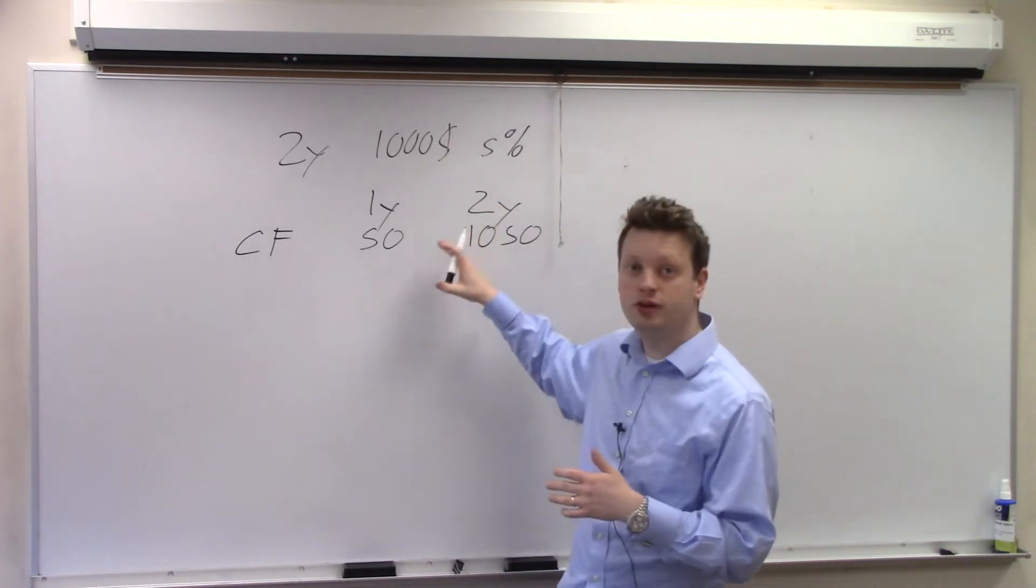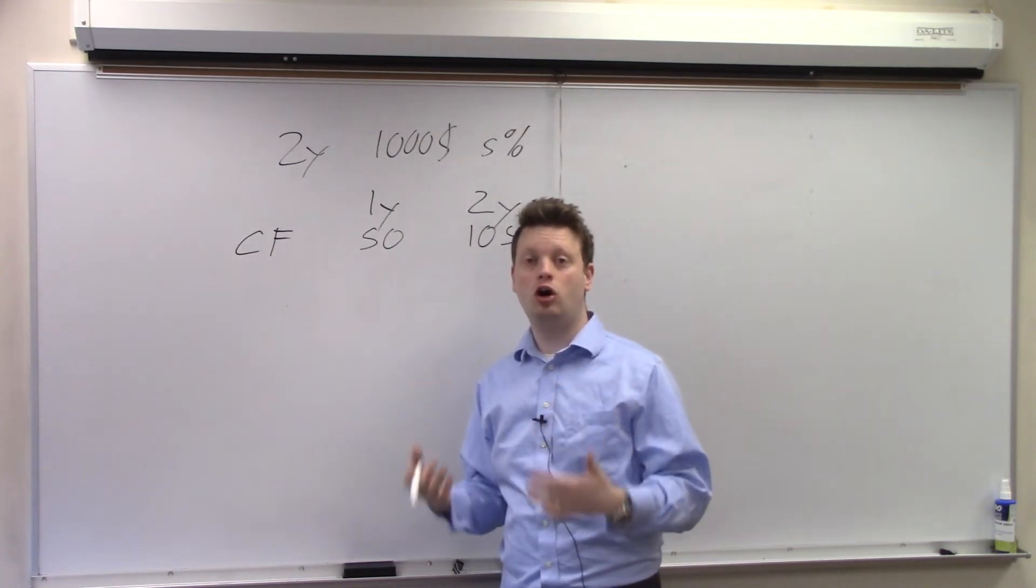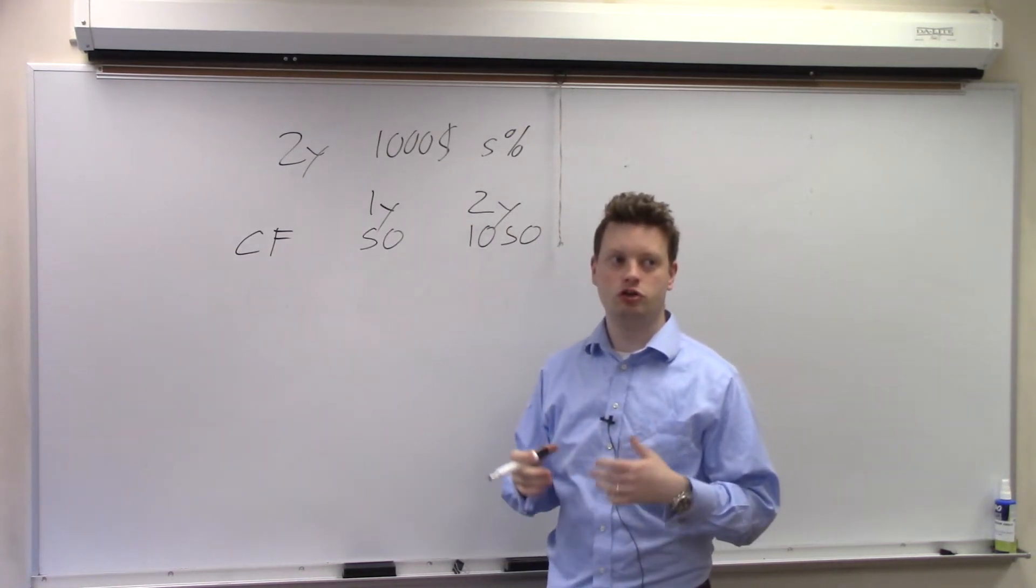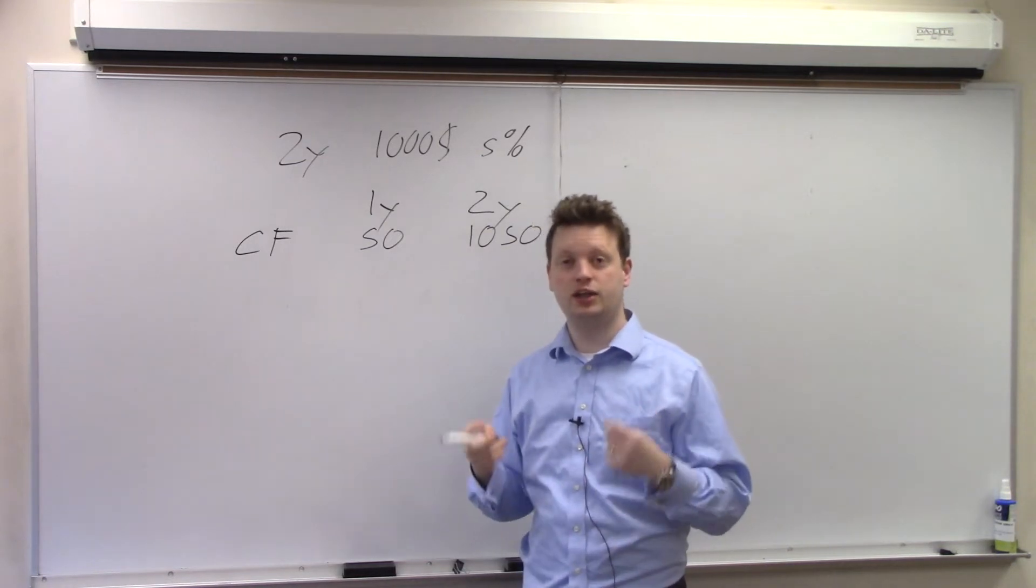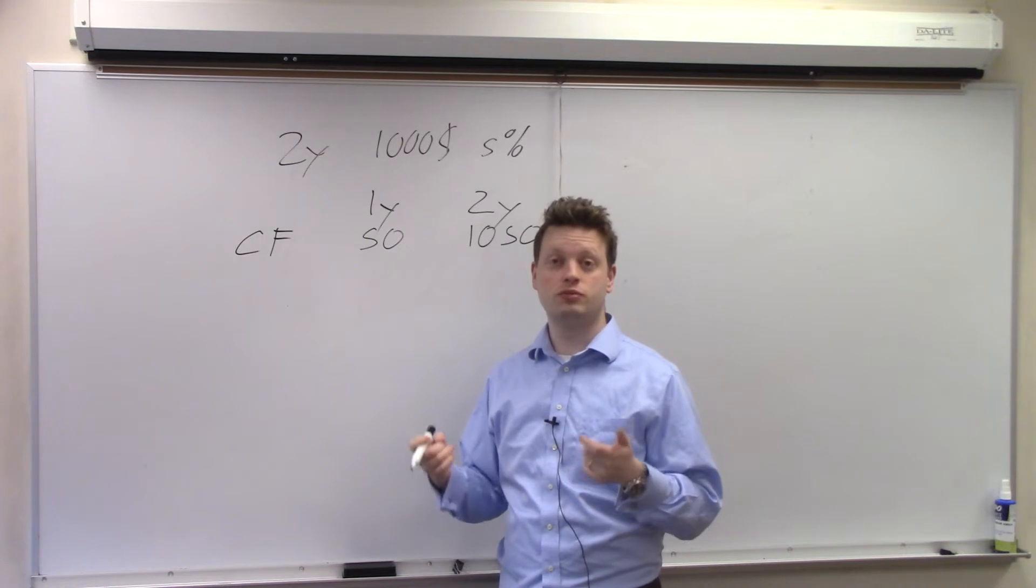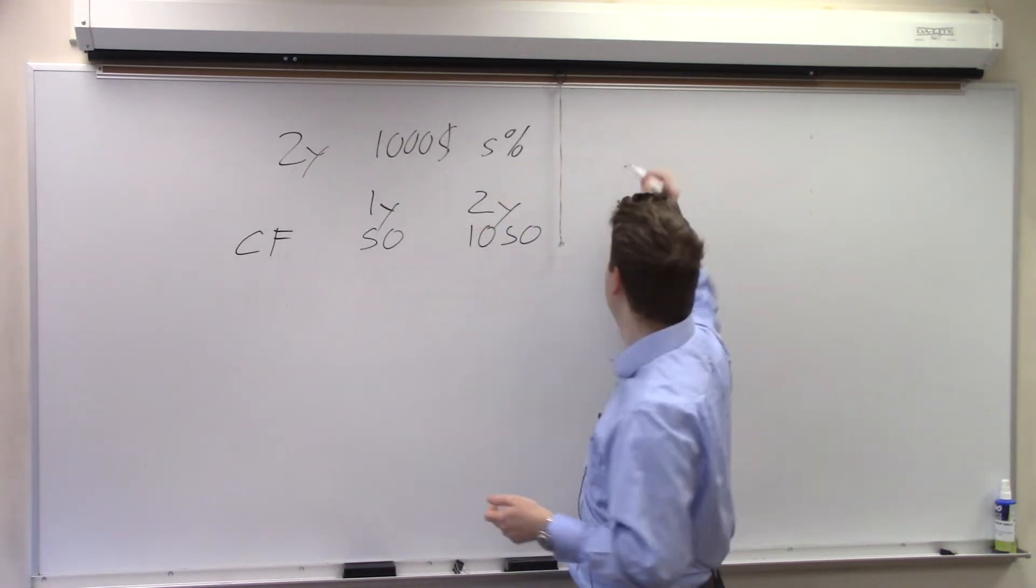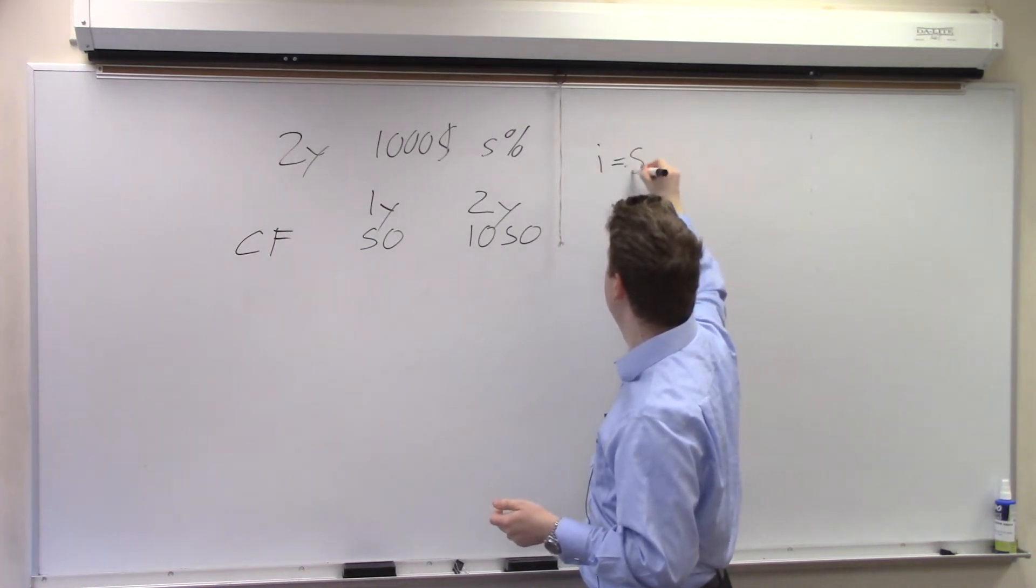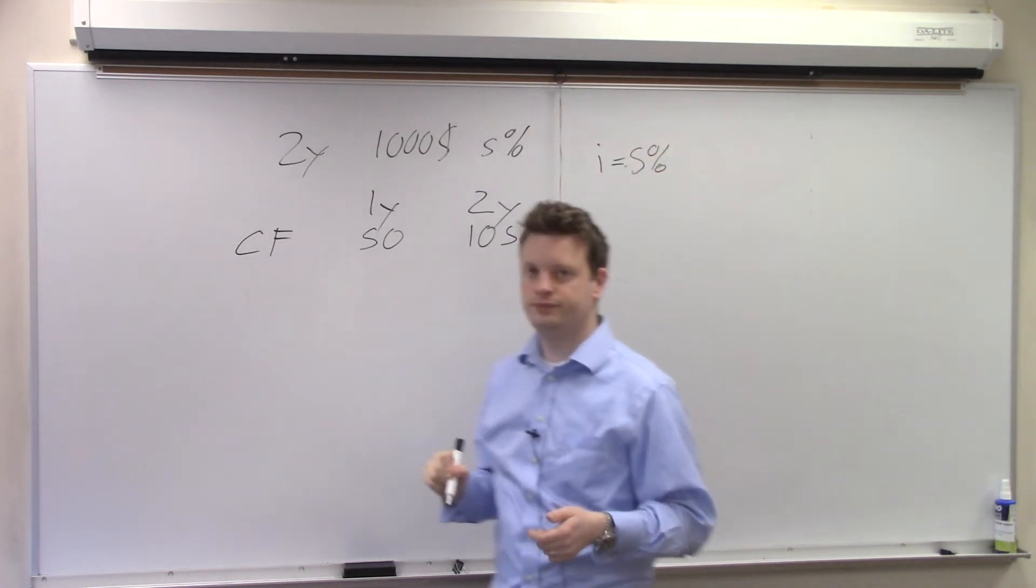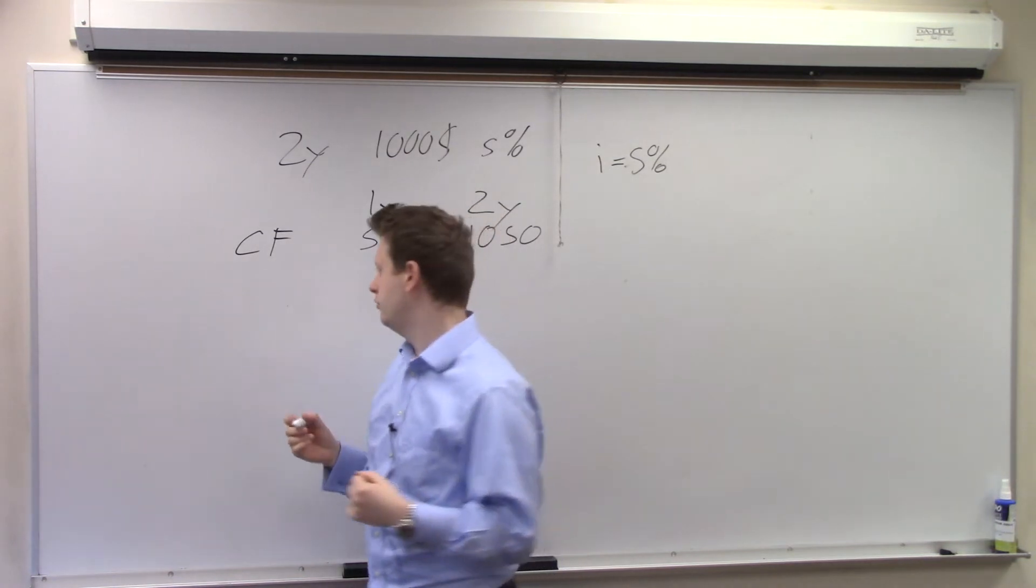Next I need to calculate what is the present value of these payments. To be able to calculate that I need to know a market interest rate. For a start let's assume this market interest rate is 5% just like the coupon. So we have an interest rate in the market of 5%. Now we can calculate the present value of this.